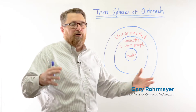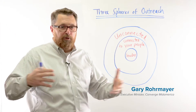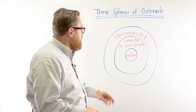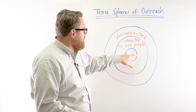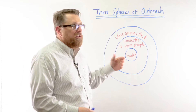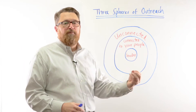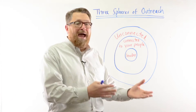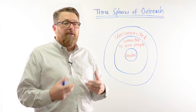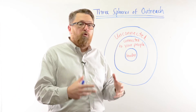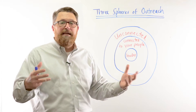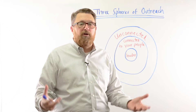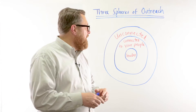In every church are what I call these three spheres of outreach. The first one is the leader — the sphere that the leader has influence over. So you might be a pastor, you might be a church planter, and the fact is that you are relationally connected with so many people in your community. So that's the first one.